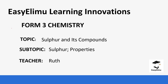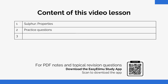Welcome to EZLM Learning Simplified. My name is Ruth and today we are going to be looking at sulfur and its compounds — specifically some of the chemical properties of sulfur. Previously we talked about the allotropes of sulfur and how they are prepared in the lab. Today we are going to look at how sulfur reacts with different compounds, and then we are going to do one question.